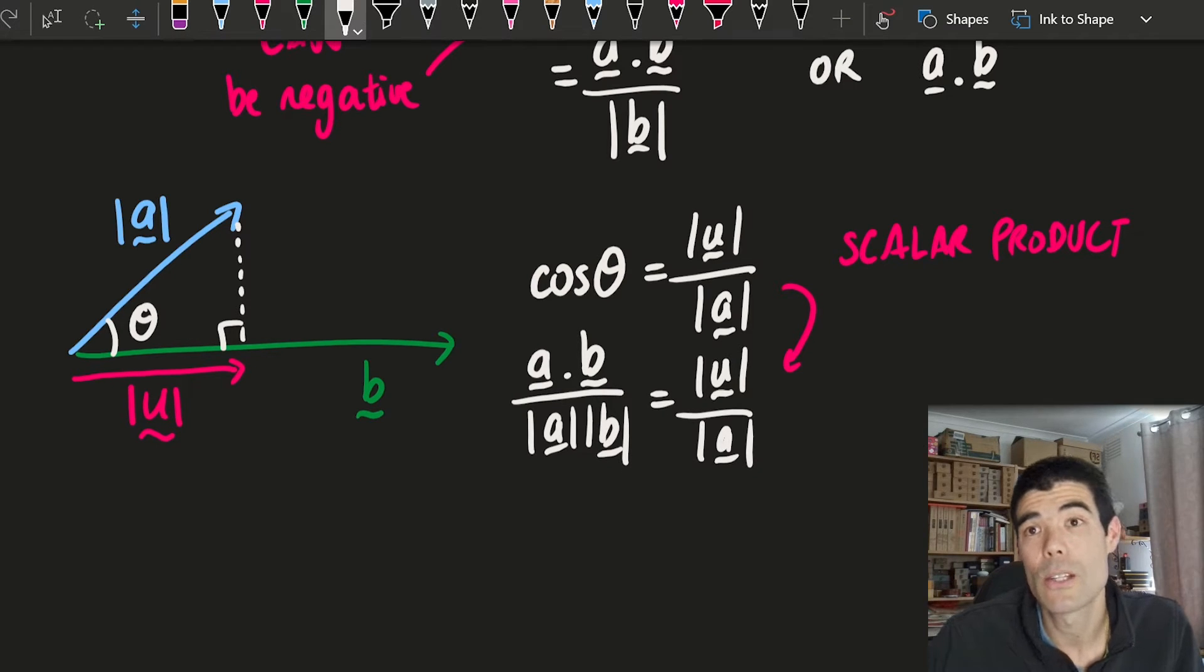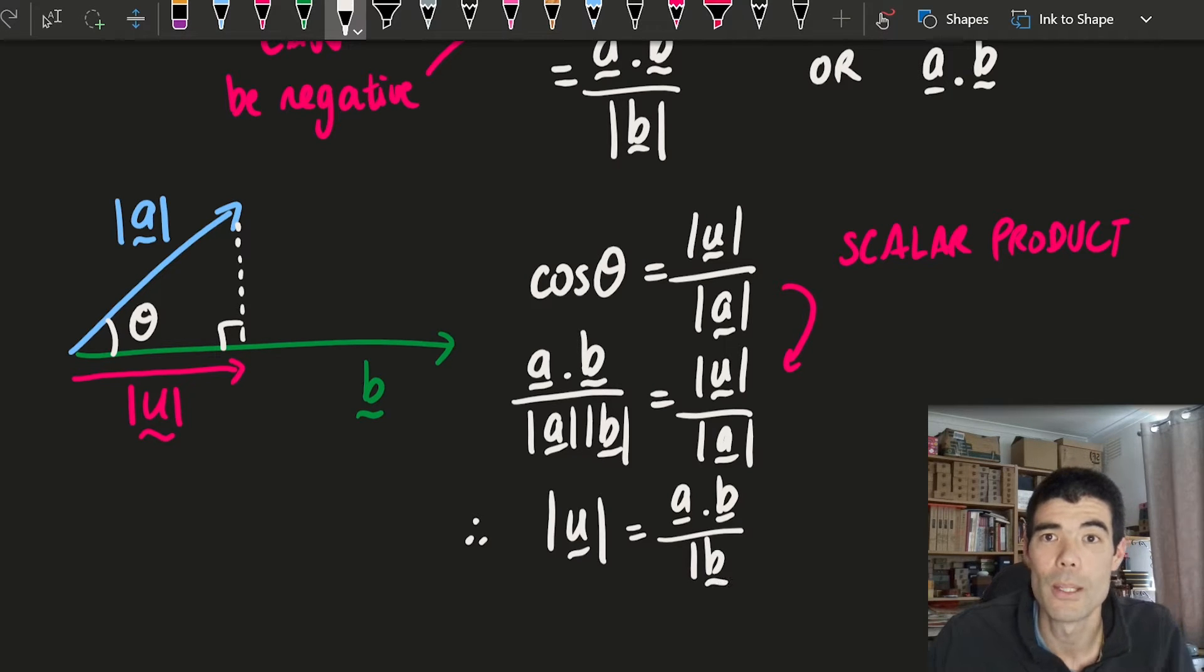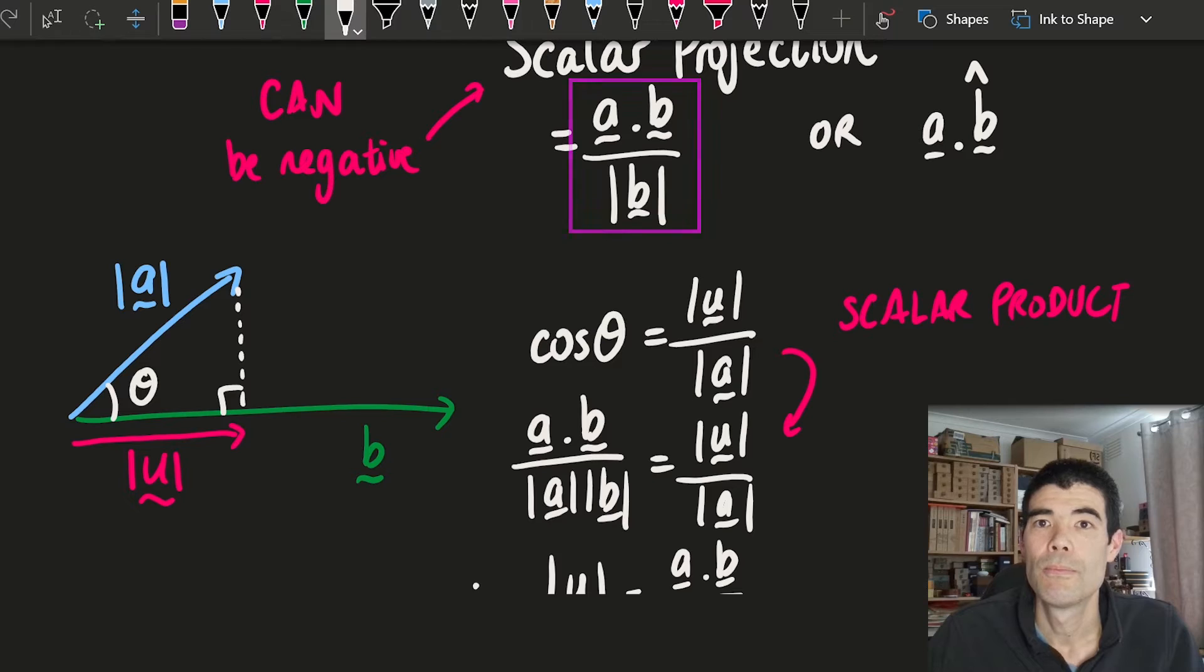And then if we were trying to solve for the length of u, the lengths of a will cancel and we'll get a dot b over length of b, which is what we had for the scalar resolute formula.